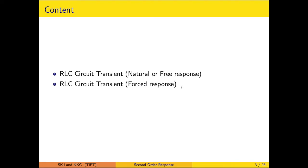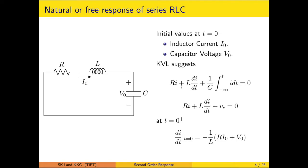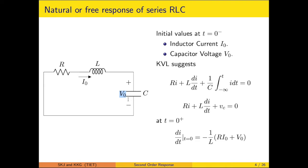The forced response is also regarded as the step response. In the free response there is no external source to support the transient behavior. However, the initial inductor current I0 or initial capacitor voltage V0 has been acquired before the response is analyzed. If we consider time t equals 0 as a switching instant, then I0 and V0 pertain to conditions just before the switching.